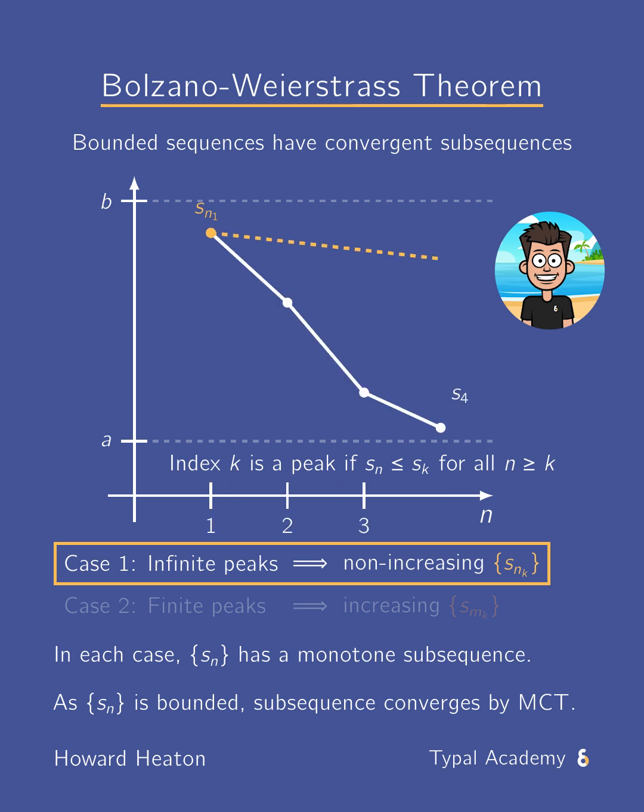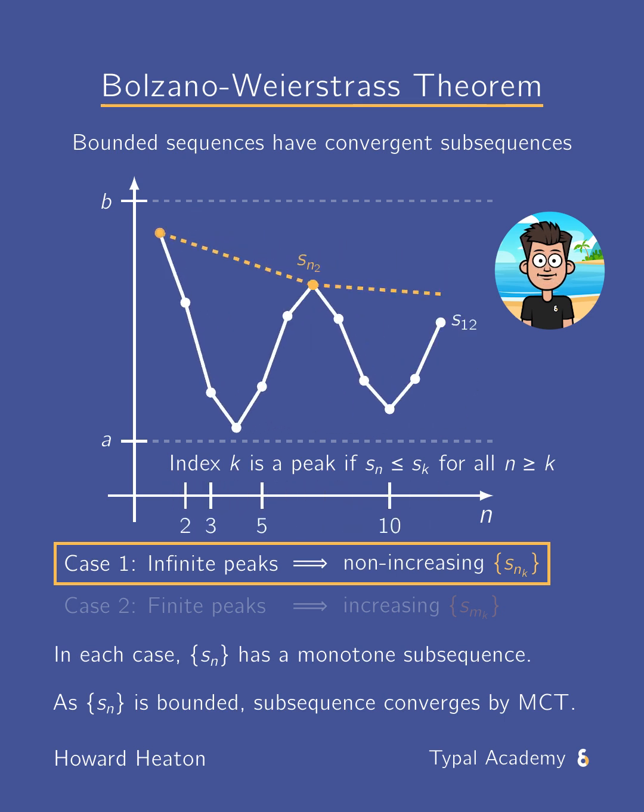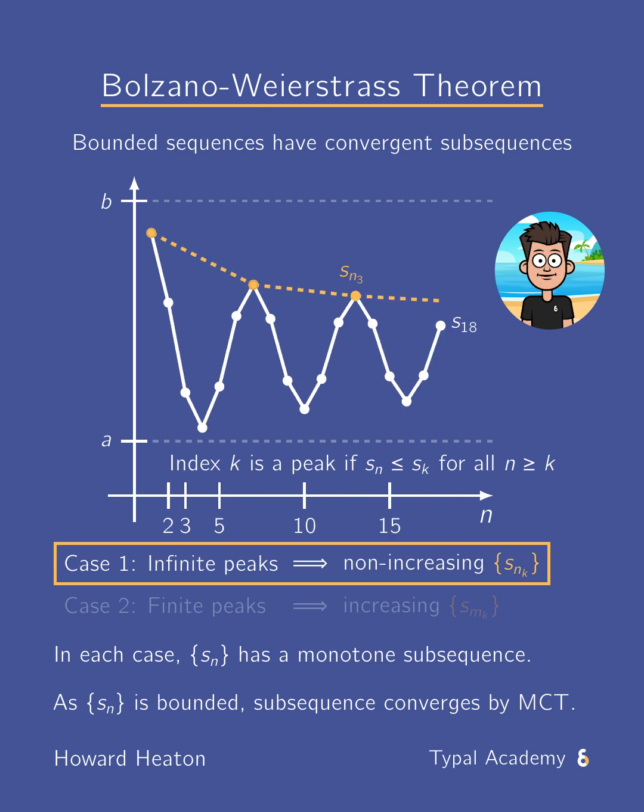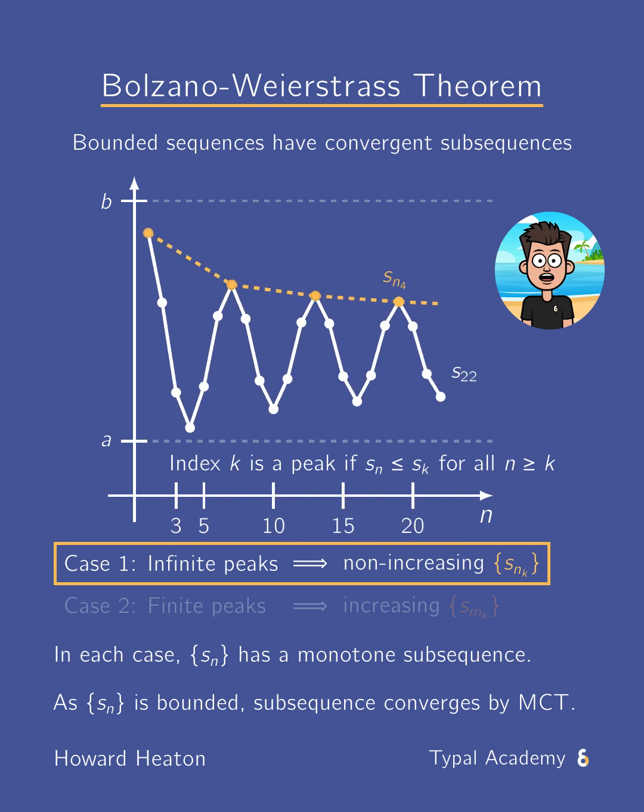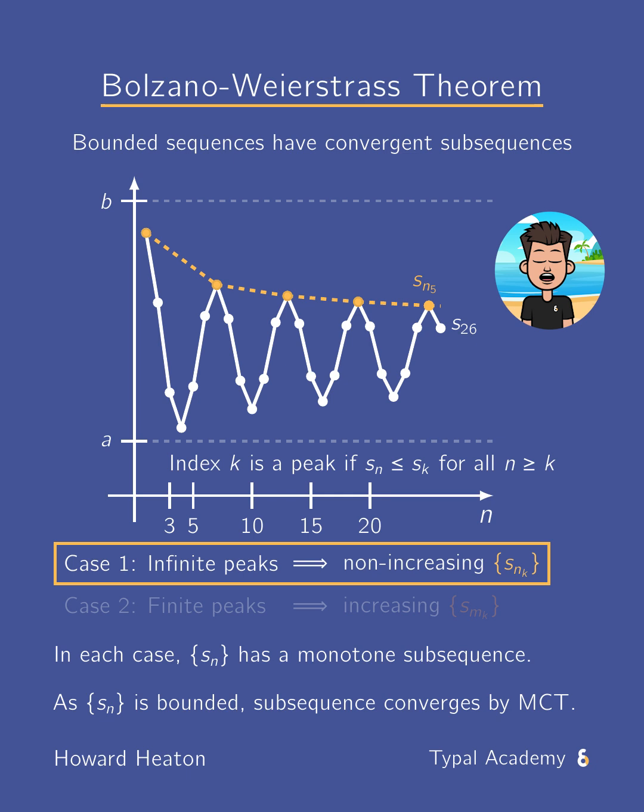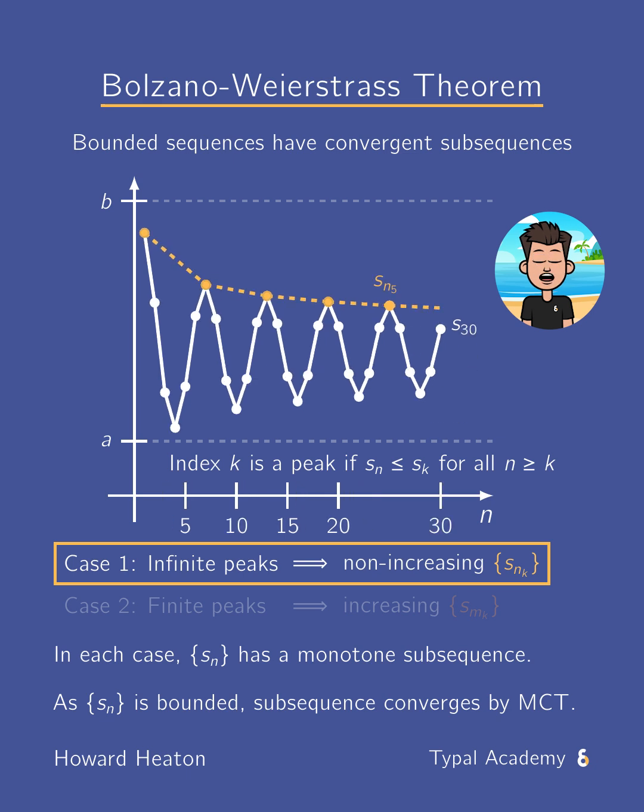We can break down a proof argument into two cases, considering whether or not there are infinite peaks. Here, a peak is some index k for which Sn is no more than Sk for all n at least as big as k.